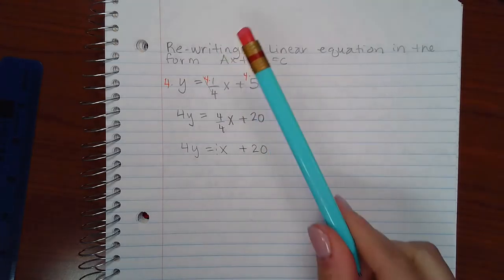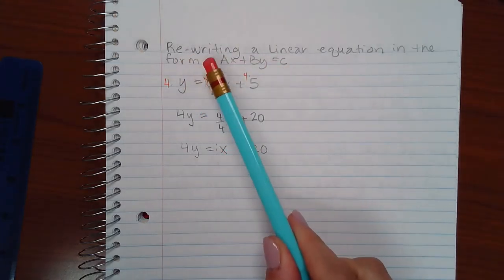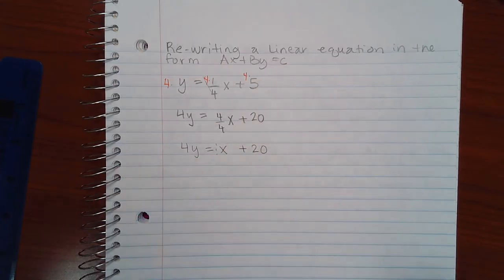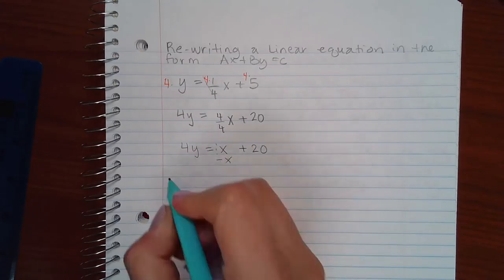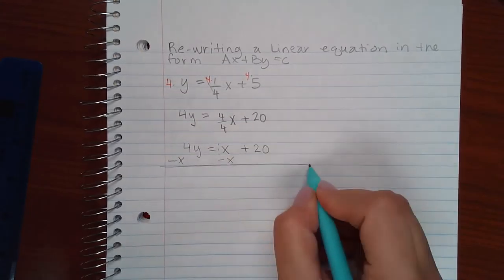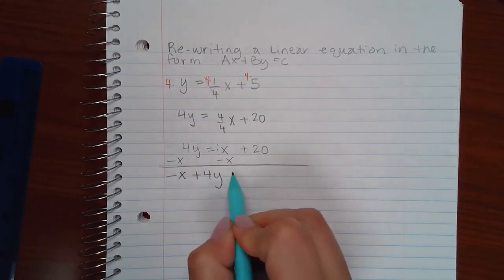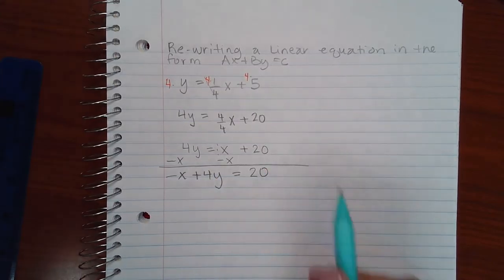However, notice that in the standard form, x is on the left side of the equal sign. So I need to get this x to the left. To do that, I would have to minus x on both sides. So I get a negative x and a positive 4y on the left, and I still have a positive 20 on the right.